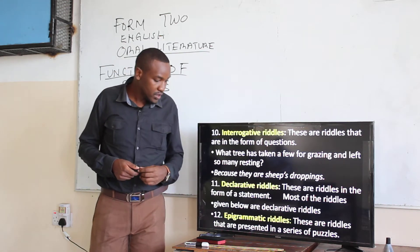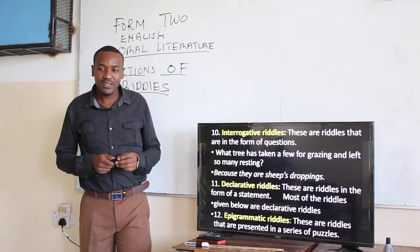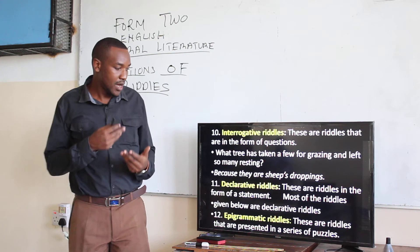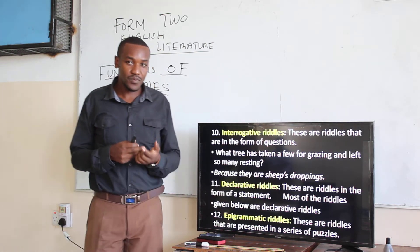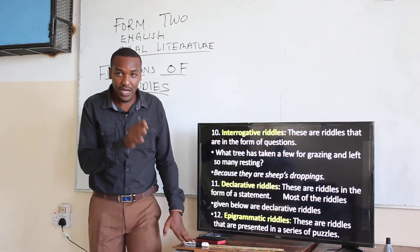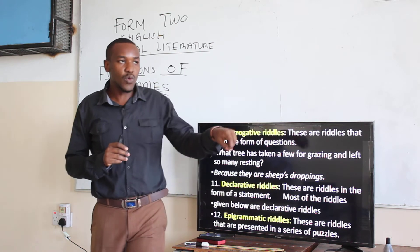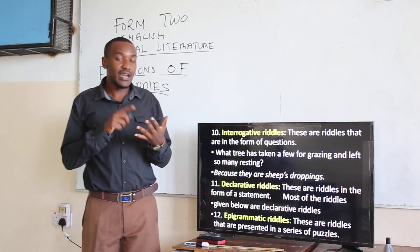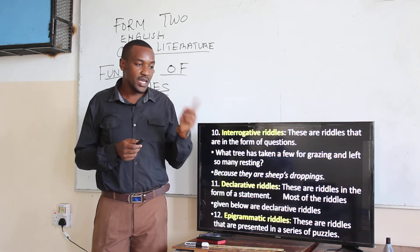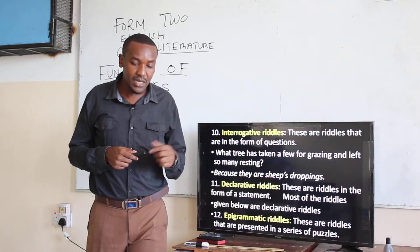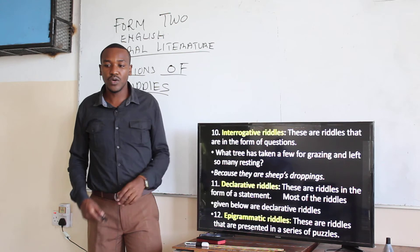Then we have epigrammatic riddles. These are riddles presented in a series of puzzles. For example, there is a man who has a goat, a leopard, and grass, and he needs to move them across a river. His boat can only carry one item at a time. If you leave the goat with the grass, the goat will eat the grass; if you leave the goat with the leopard, the leopard will eat the goat. Those series of puzzles are referred to as epigrammatic riddles.